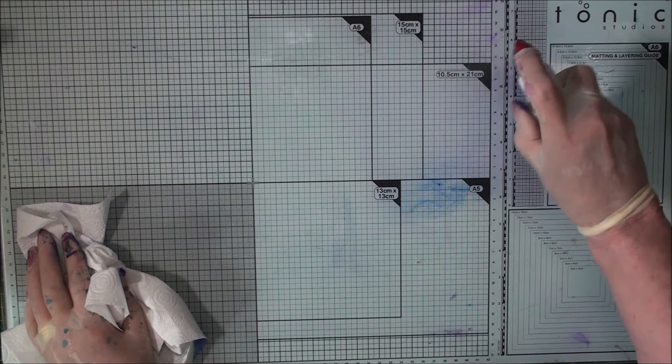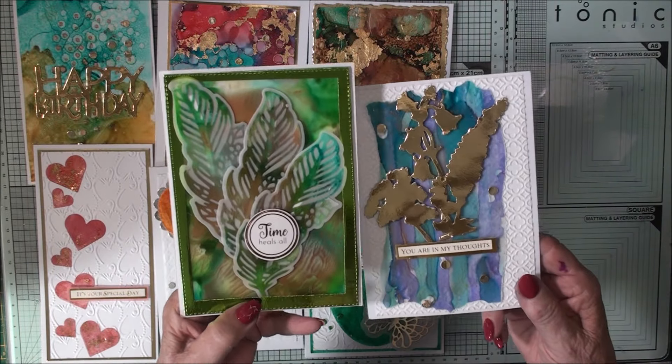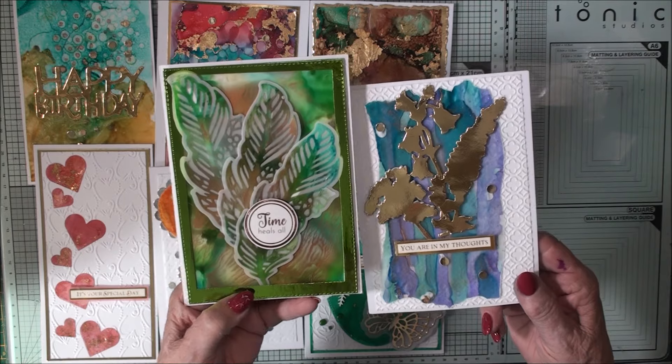So to clean up, just squirt your isopropyl around on your glass mat and wipe it off. So here are the two cards that I've just created with the parchment and the alcohol inks.